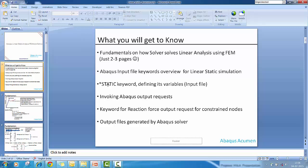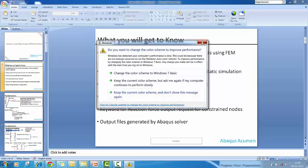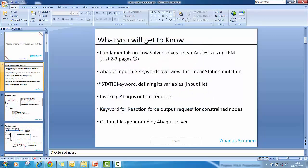The keyword static is very vital for defining linear static simulation step. Once we have all definitions done like node, element, material properties, shell properties, we need to invoke output request into a DAT file. We'll be interested to see the reaction force at constraint nodes, which I will also cover. And finally, we'll have a quick look at the output file generated by Abaqus solver.